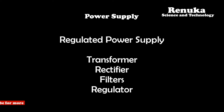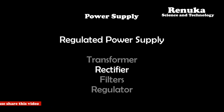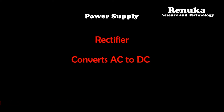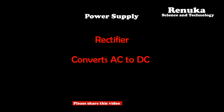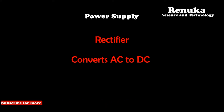Regulated power supplies comprise many circuits, one of which is the rectifier — an essential part because it converts AC voltage into DC. A rectifier is an electronic circuit that converts bidirectional current into unidirectional current. The main component used in a rectifier is the diode, which conducts only in one direction when in forward bias mode, making it the main rectifying element.